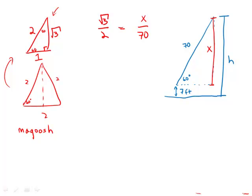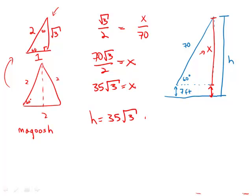Multiply both sides by 70, what we get is 70 root 3 over 2 equals X. Divide by 2, 35 root 3 equals X. So 35 root 3 is that X distance. We also need to add this 7 to get the total height. So the total height is 35 root 3 plus 7.